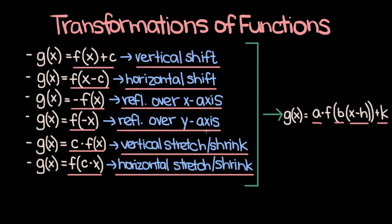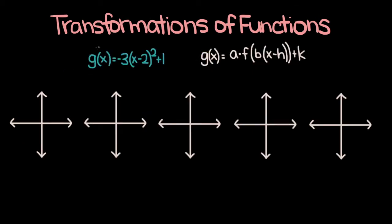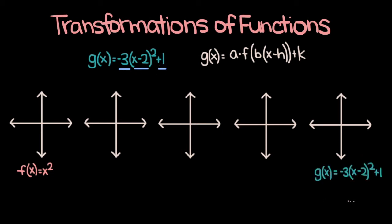Now let's put all this to use and actually graph some functions. Here's our first example: we have the function g of x is equal to negative 3 times x minus 2, whole squared, plus 1. I've also copied over the general form of a transformed function for reference. The first thing I like to do when looking at these problems is identifying what type of function we're working with. I see the squared on the x term, so I know it's going to be some sort of parabola. So let's start off by graphing the parent function for parabolas — that is, f of x is equal to x squared — and then apply these transformations one by one until we end up with g of x.